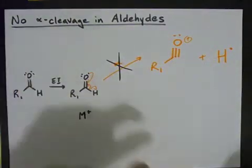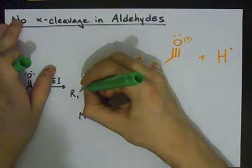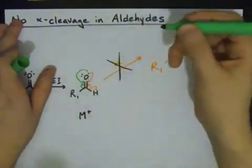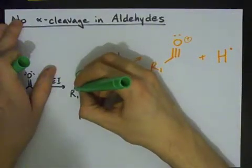Let's try alpha cleavage on the other side. Let's have this bond break. One electron goes into the bond. That electron moves to pair up with it. And one electron goes to R.